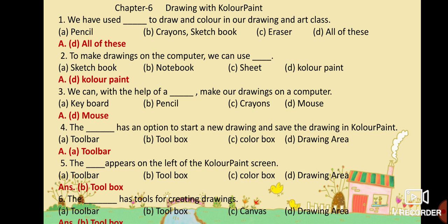MCQ No. 4: The dash has an option to start a new drawing and save the drawing in Color Paint. Option A: Toolbar. Option B: Toolbox. Option C: Color Box. Option D: Drawing Area. Your answer is Option A: Toolbar. The toolbar has an option to start a new drawing and save the drawing in Color Paint.